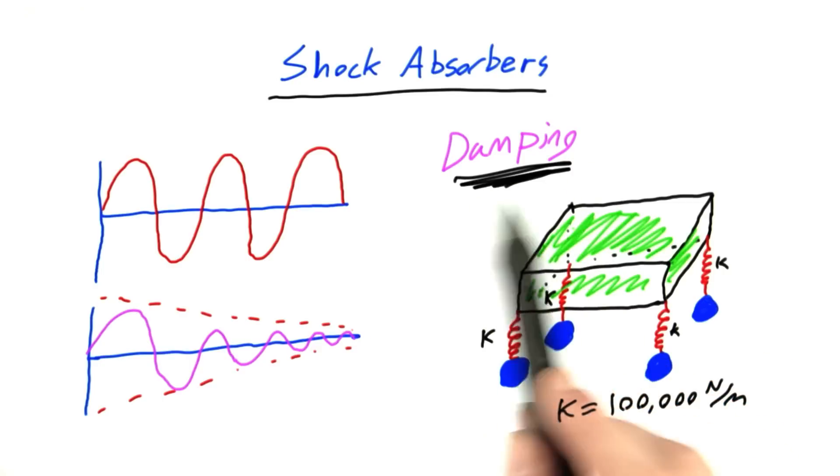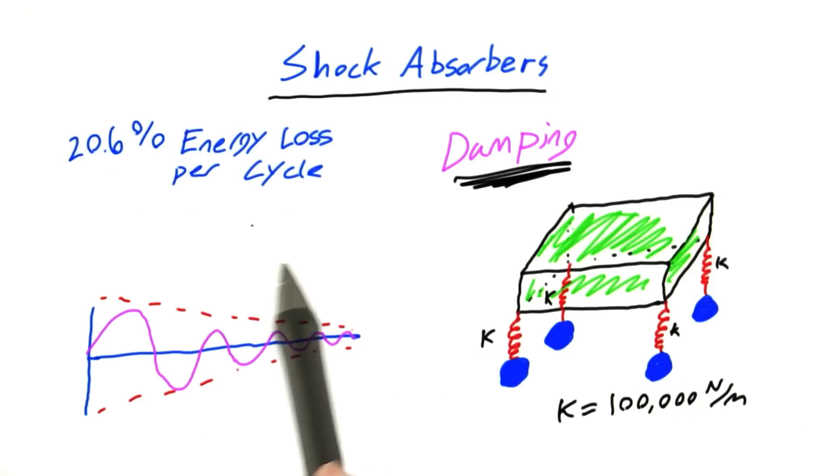Now, there are actually several different types of damping, but for our problem, let's only consider this type of damping, which we call underdamping, where the amplitude decays in this kind of exponential pattern. Now we're ready to move on to the problem.